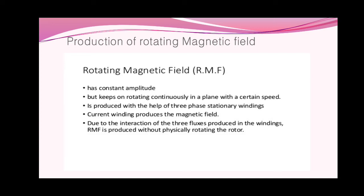That is the importance of rotating magnetic field. First, it has constant amplitude. Second, it keeps on rotating continuously in a plane with certain speed — hence it is continuously rotating with constant speed. Third, it is produced with the help of three-phase stationary winding. Fourth, current in the winding produces the magnetic field. Fifth, due to the interaction of three fluxes produced in the winding, RMF is produced without physically rotating the rotor.